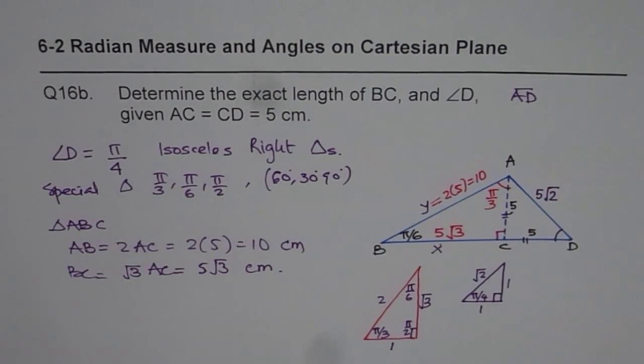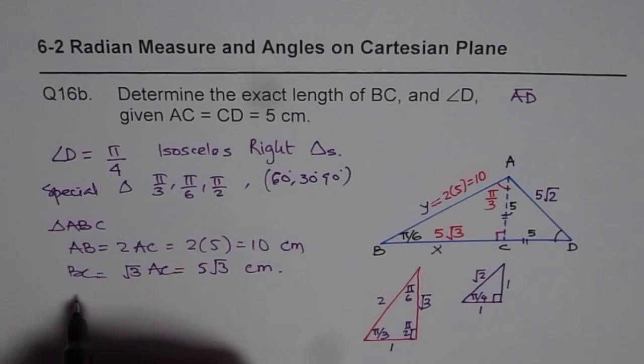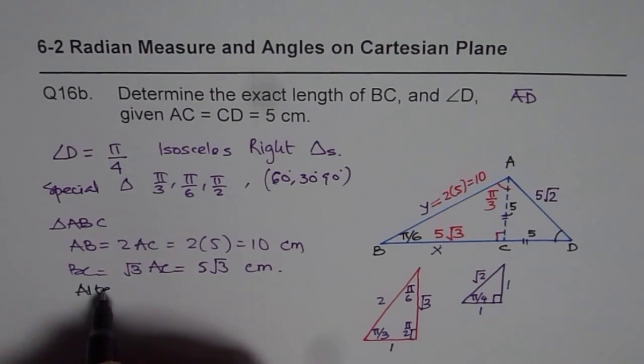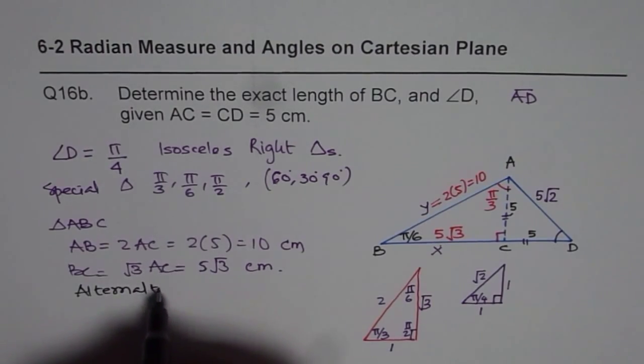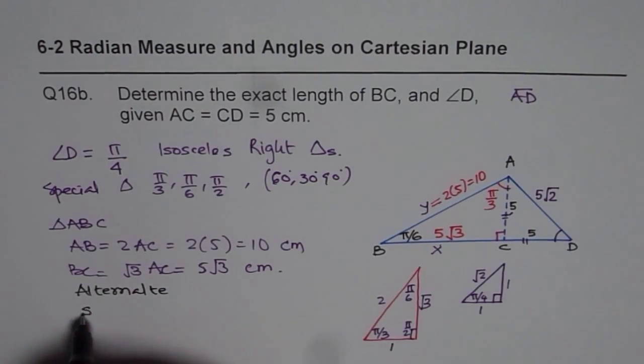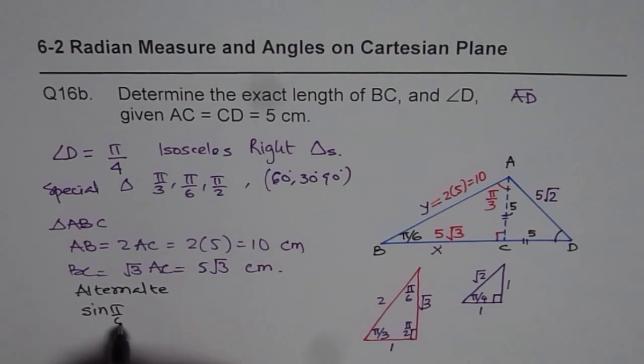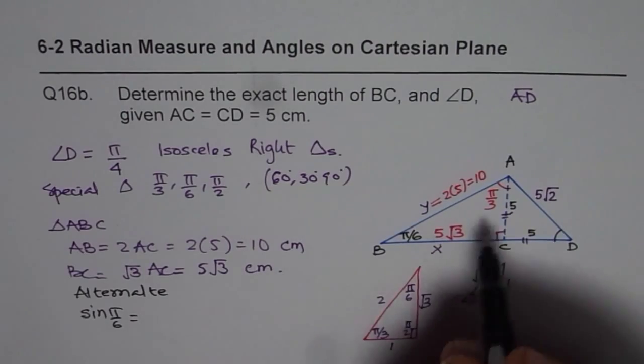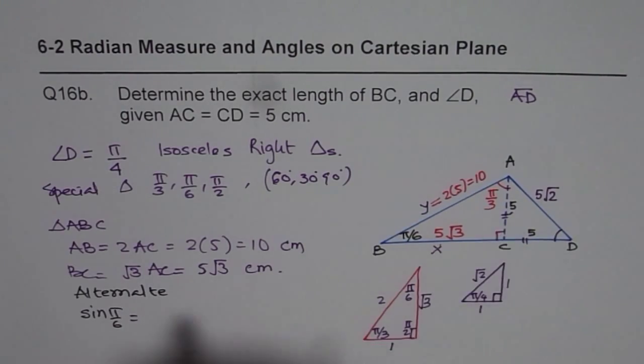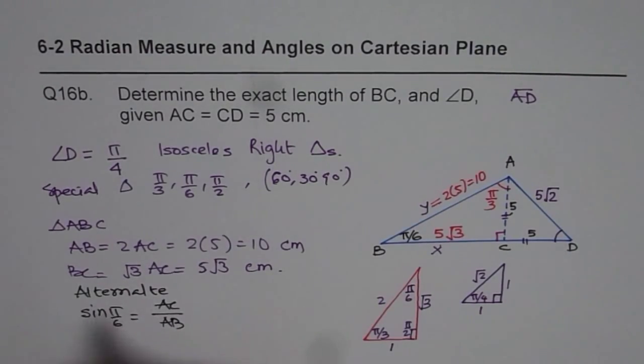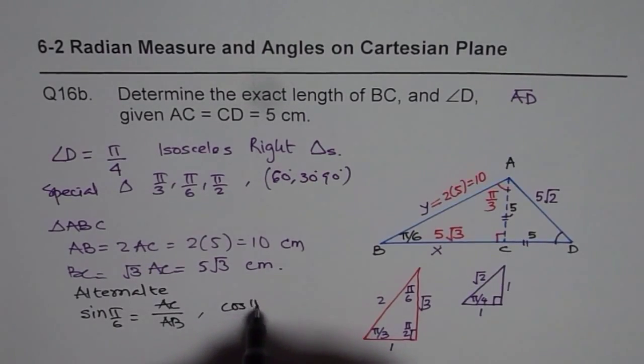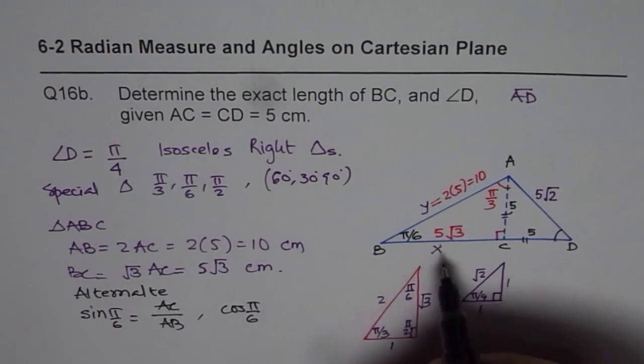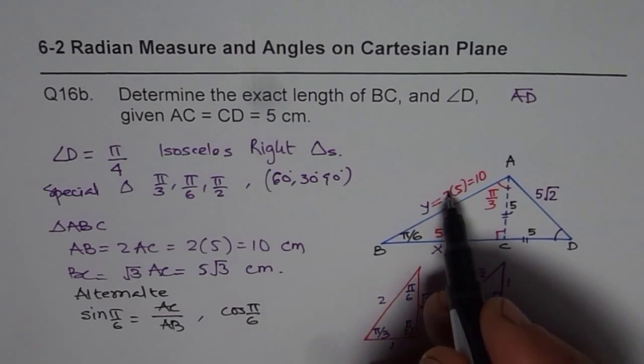And of course, you have an alternate method, which we used earlier for solving the question. The alternate method is always to use standard triangles. You can say what is sine pi by 6 equals to. That is equals to opposite over hypotenuse. So that is AC over AB. So from here, you can find what AB is, right?